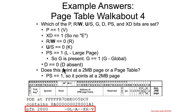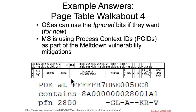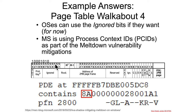D is 0, indicating this page is not dirty. Now, looking at the most significant bits to see that the XD bit is set, you may have noticed that this particular value — 8, 1, 0, 1, 0 for A — would mean that some other bits get set that we haven't actually talked about in this class.